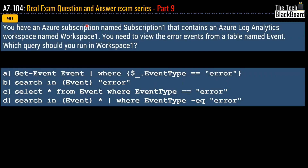Moving ahead with question number 90: you have an Azure subscription named Subscription 1 that contains an Azure Log Analytics workspace named Workspace 1. You need to view the error events from a table named Event. Which query should you run in Workspace 1? There are four options listed and the correct answer is option B. Note that Microsoft can tweak these commands slightly, but the correct answer is the one highlighted with the green arrow.